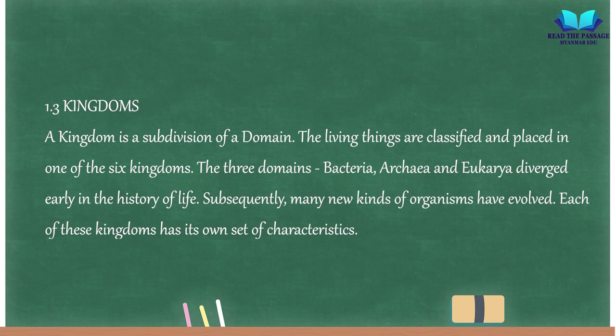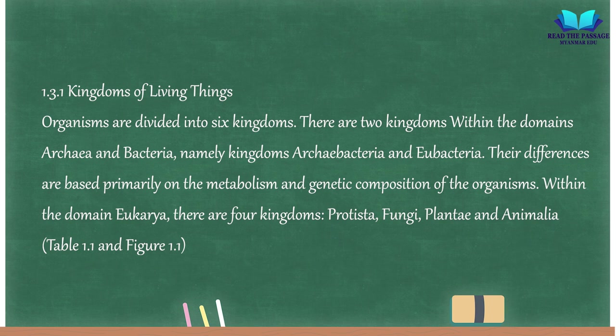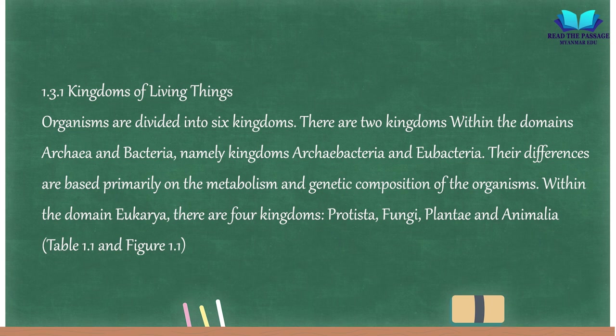1.3 Kingdoms. A kingdom is a subdivision of a domain. Living things are classified and placed in one of six kingdoms. The three domains — Bacteria, Archaea, and Eukarya — diverged early in the history of life, and many new kinds of organisms have evolved since. Within the domain Eukarya there are four kingdoms: Protista, Fungi, Plantae, and Animalia.